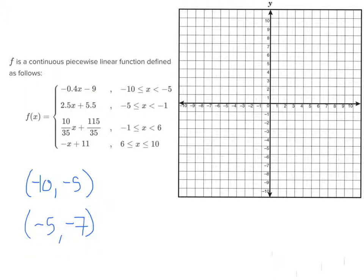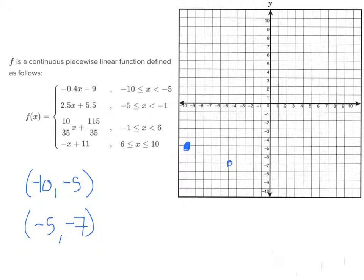So I go left 10 and down 5 to plot negative 10, negative 5. Then I go left 5 and down 7 to plot negative 5, negative 7, and that should be an open circle. Then I connect them.